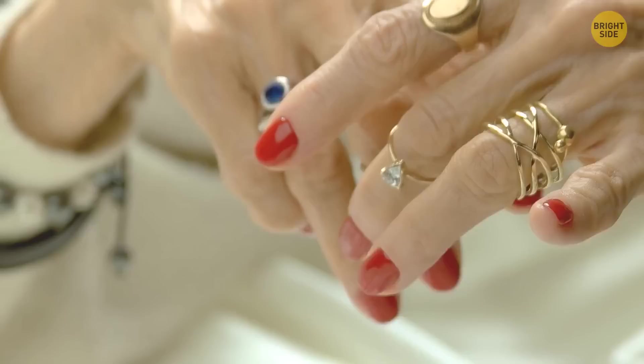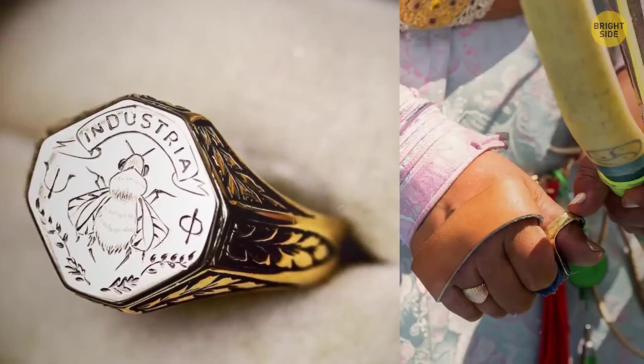Rings used to be more than a stylish accessory. The nobility used rings as a seal. Archers wore rings to protect their fingers from bowstring injuries, while needlewomen from needle pricks.